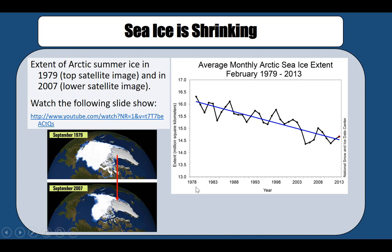We have been measuring sea ice since around 1979 with the help of satellite images. Two satellite images from 1979 and 2007 show a striking difference — there was a lot of sea ice covering the Arctic in 1979, but by 2007 almost 30 to 40 percent had melted. The data showing extent in millions of square kilometers shows a progressive decline of sea ice over time, and this trend is increasing.